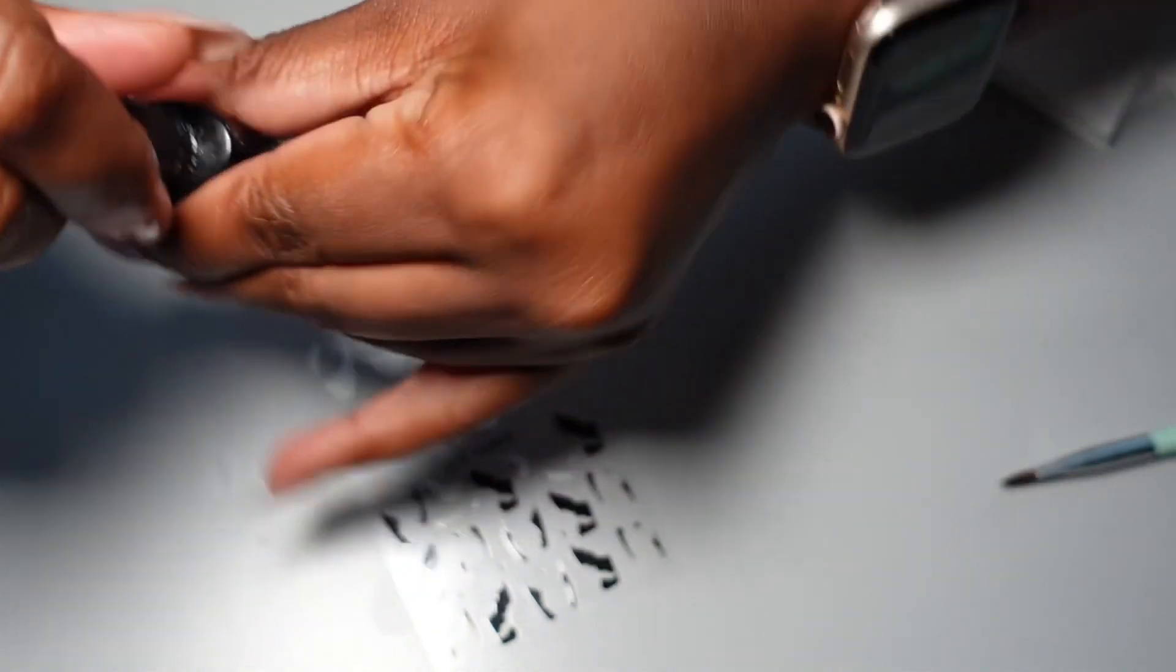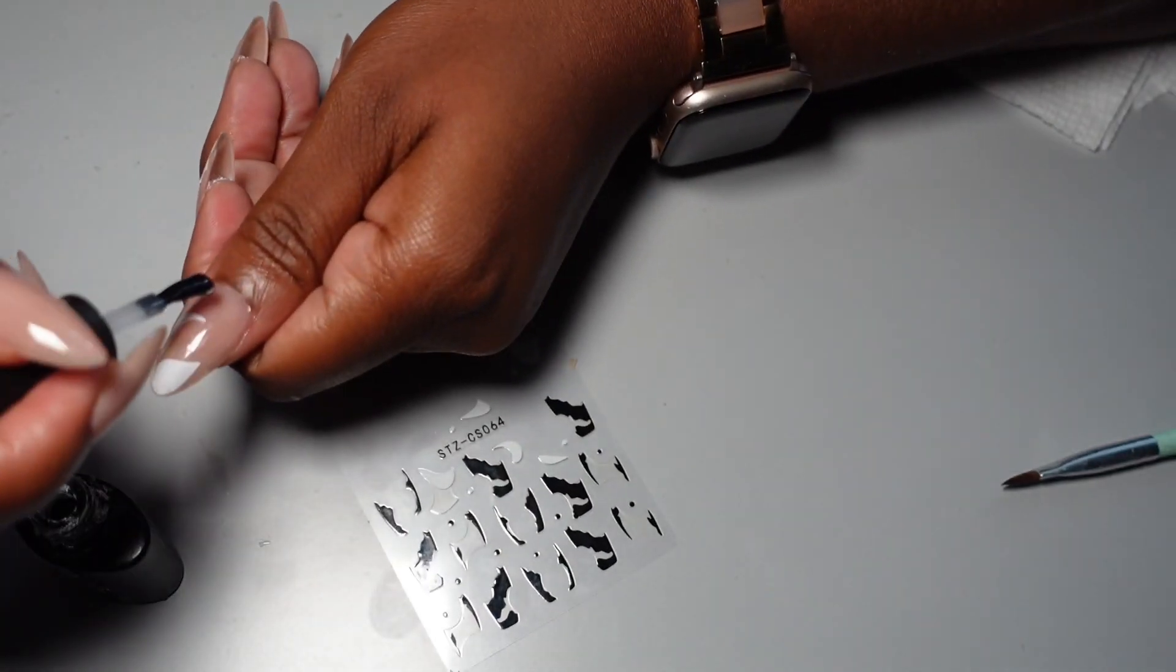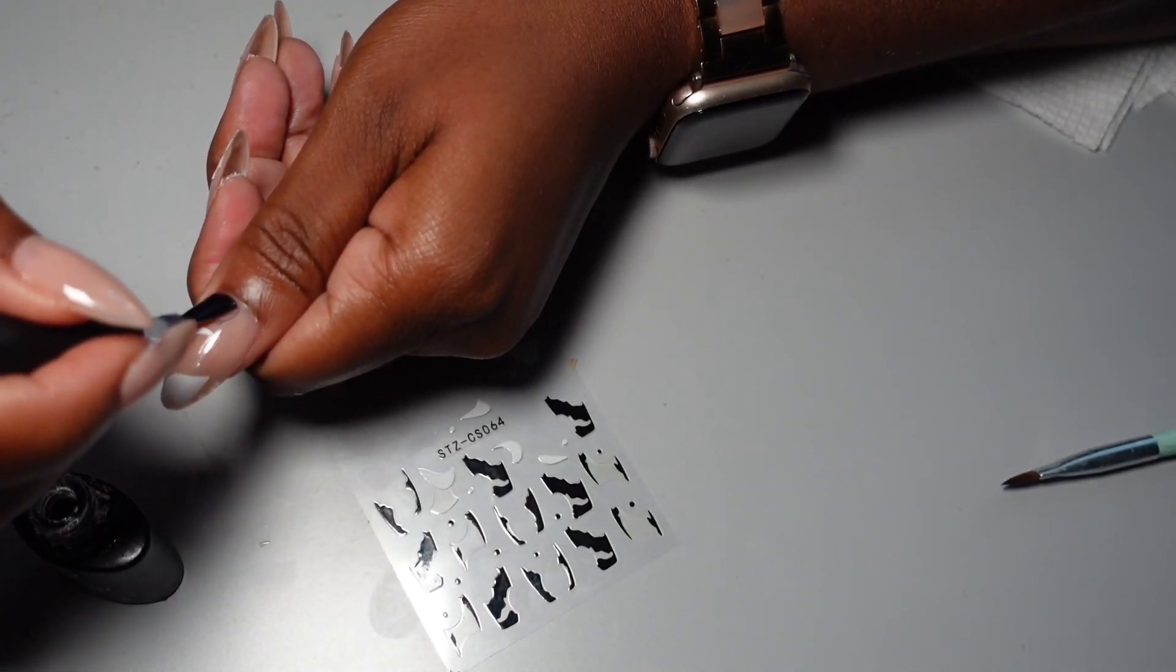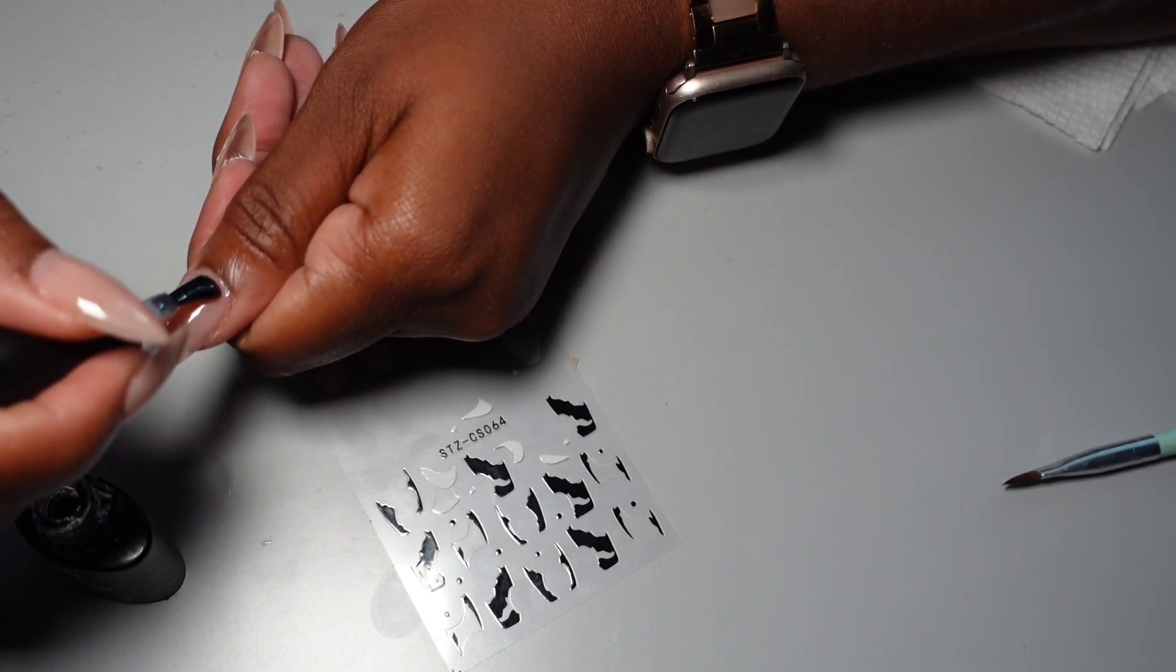So now, like I've mentioned, I'm going to take this Beetles top coat, going to apply it to each nail, and then we're going to put it under the dryer for 90 seconds.